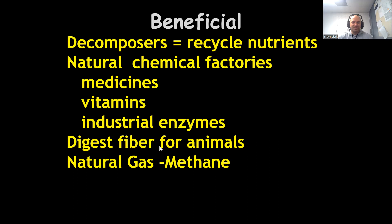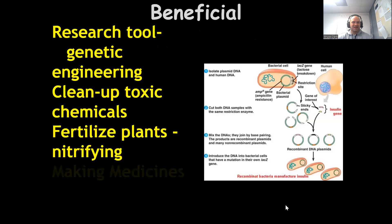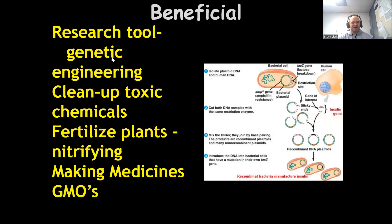Bacteria digest fiber for animals — right now inside your large intestine, you have trillions of bacteria cells breaking down food and fiber and extracting nutrients for you. They're also natural gas and methane producers, and we're using them as a research tool for genetic engineering, programming them to clean up toxic chemicals, fertilize plants, and make medicines and GMOs.